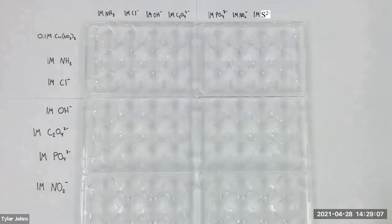We will begin by adding one milliliter of 0.1 molar copper-2 nitrate solution to the first six wells of the top row of our well plate configuration.